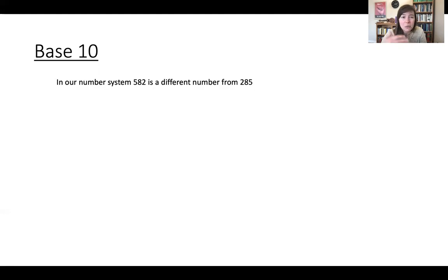But what's interesting about our number system and is different from others is that notice the digits are the same. We have 582 and 285. They're just arranged in a different order and a different order gets you a different number. So even though the two numbers have the same digits, order matters.